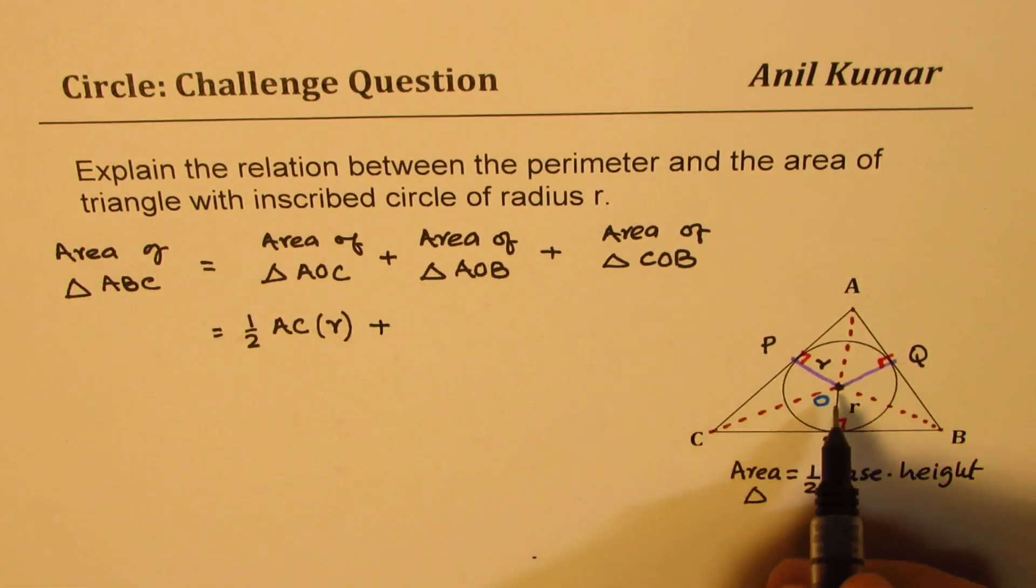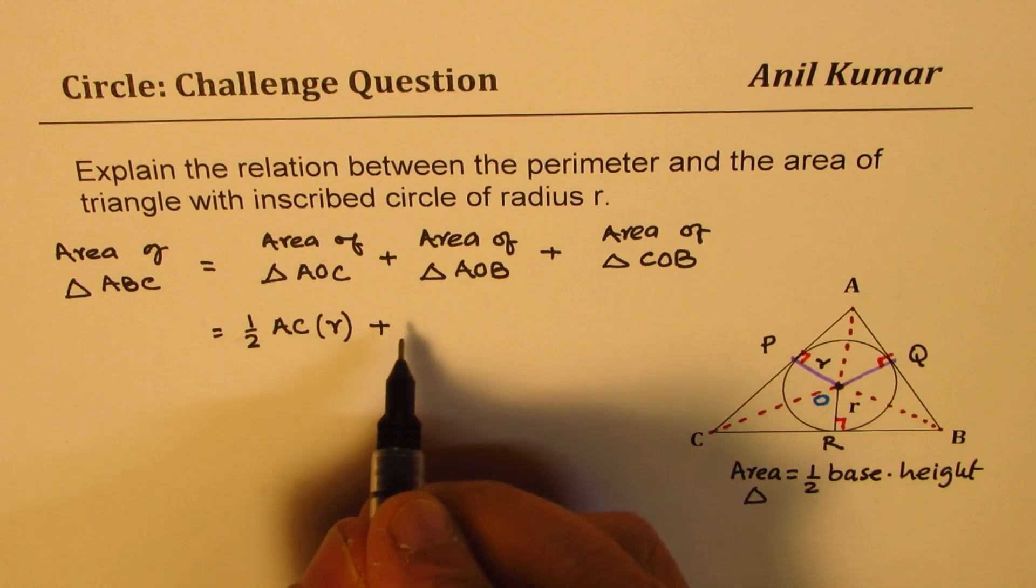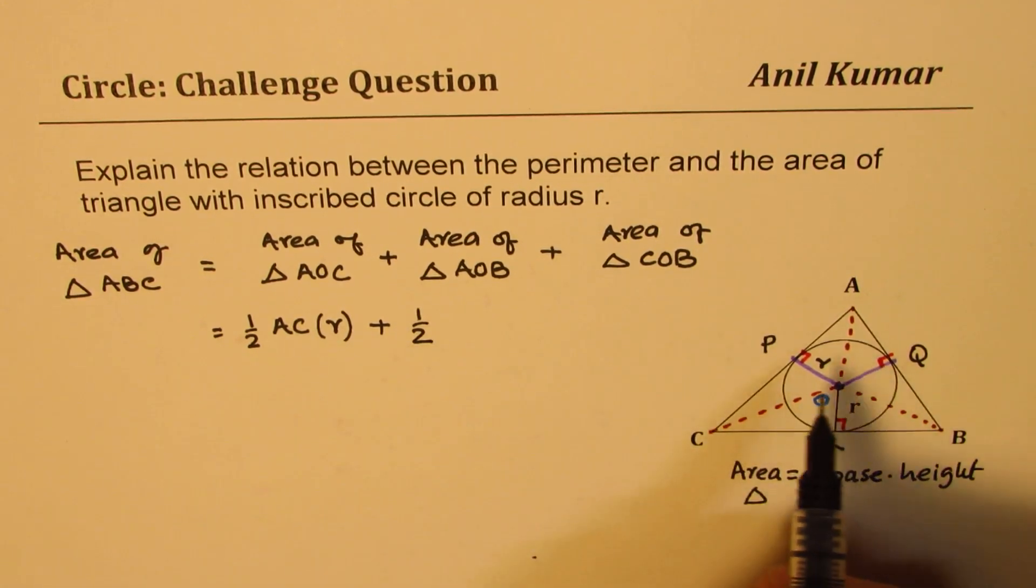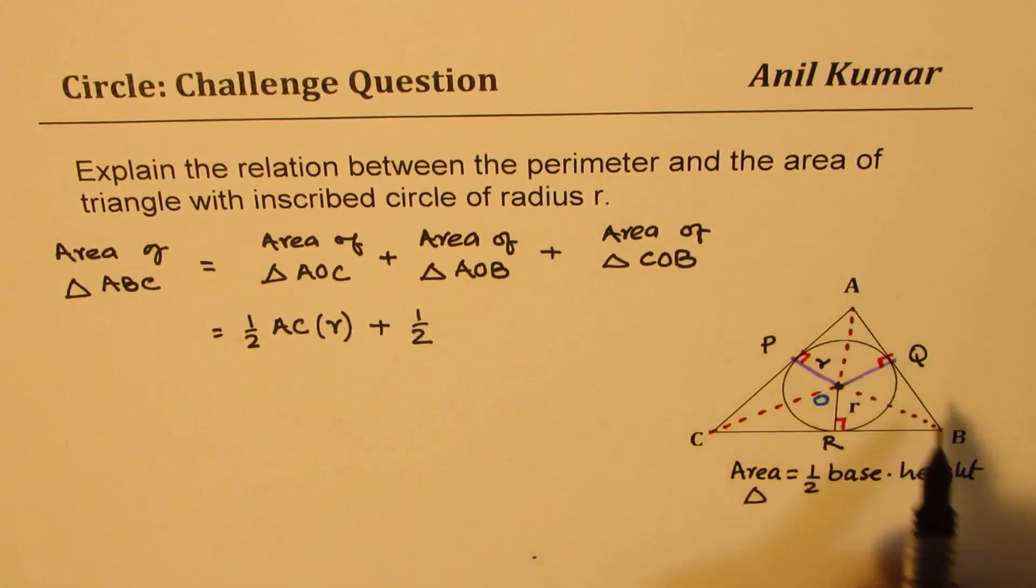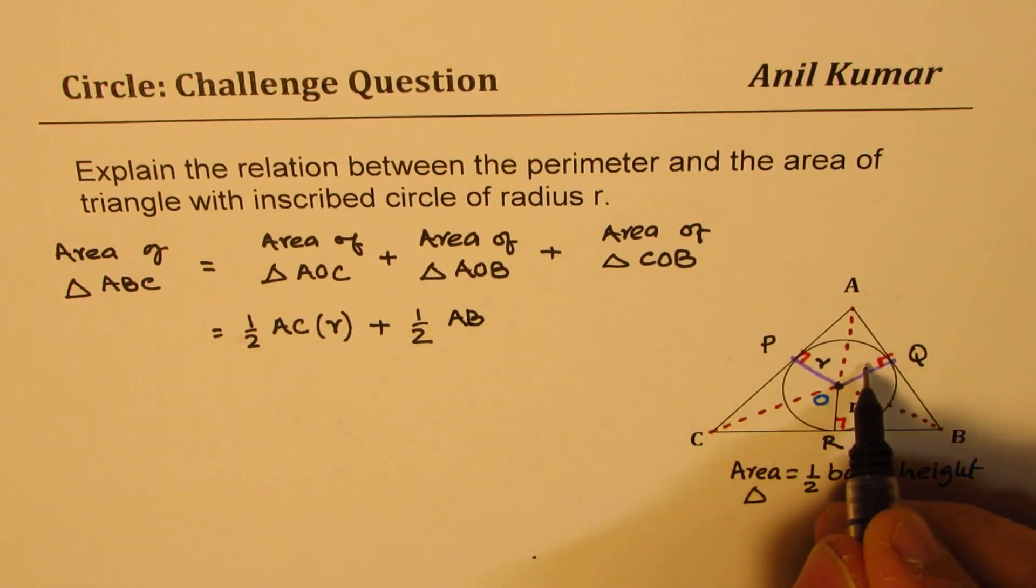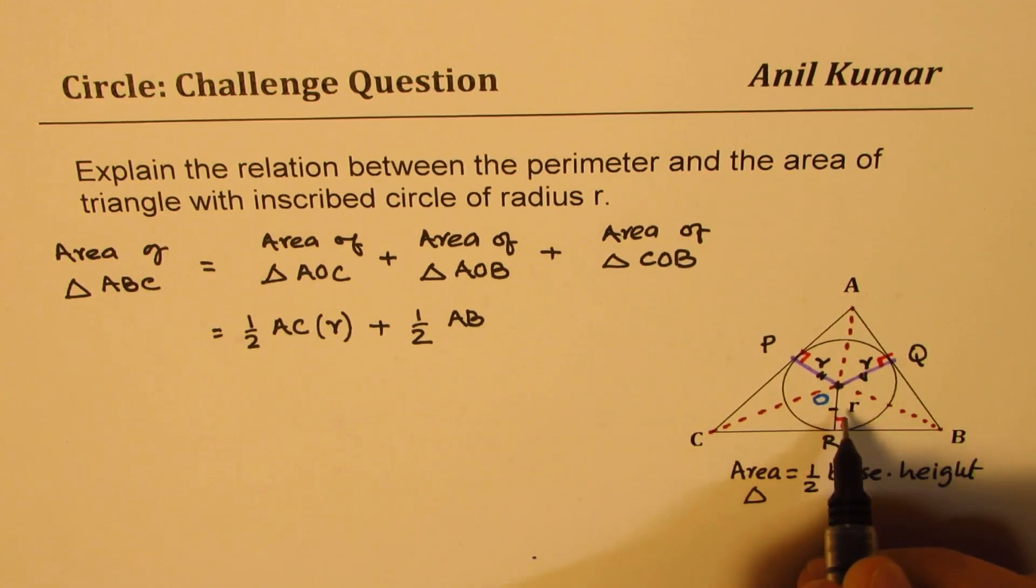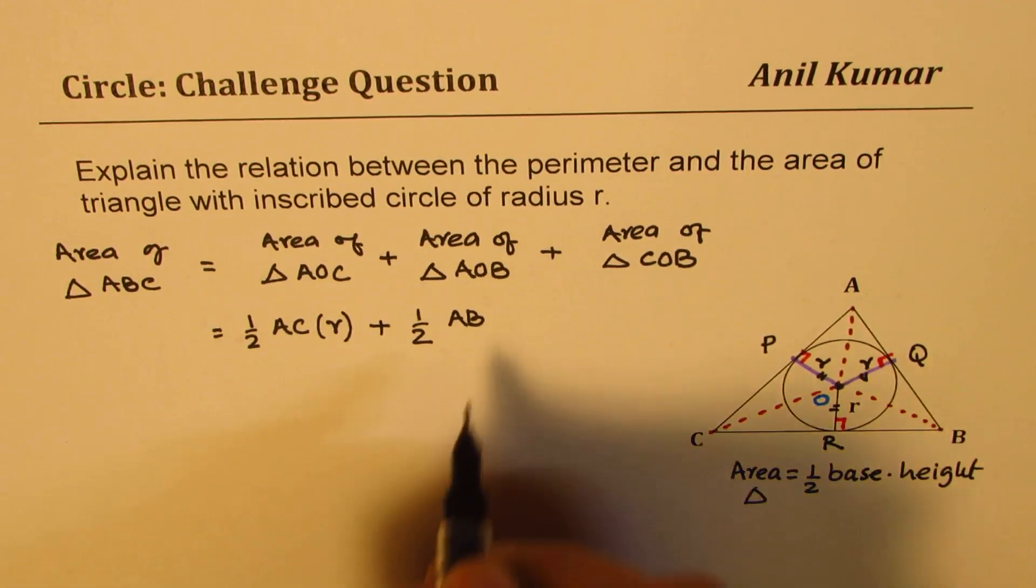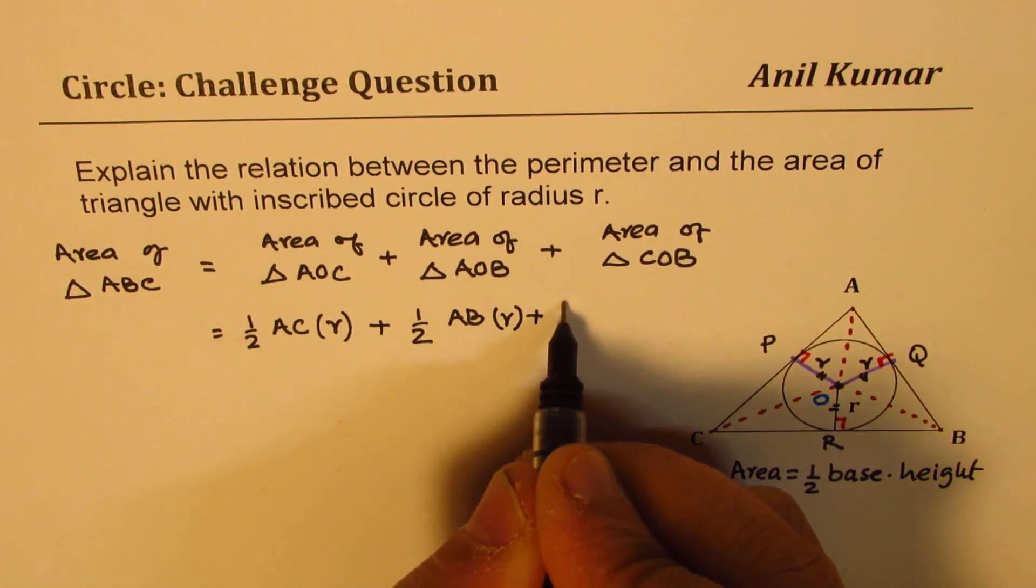Plus this second triangle, half of, we are talking about A, O, and B. So it means AB. Again, the height is R. So being the radius, the height is same. So we are going to get plus times R.